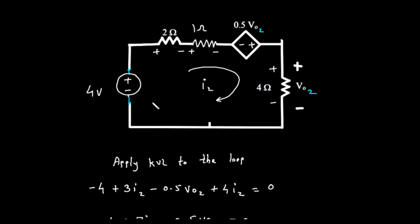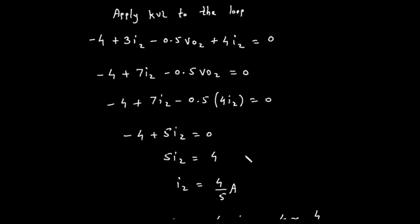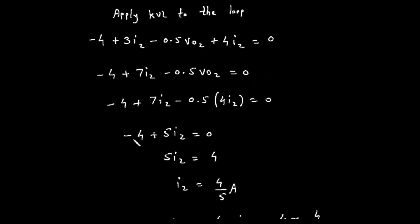Let's apply KVL to this new loop, calling the loop current I2. The solution treats the dependent source as a voltage source. The KVL equation is: minus 4, plus 3 times I2, minus 0.5 times V02, plus 4 times I2, equals 0. Combining the I2 terms: minus 4, plus 7 times I2, minus 0.5 times V02, equals 0. Using Ohm's law for the 4-ohm resistor, V02 equals 4 times I2. Substituting: minus 4, plus 7 times I2, minus 0.5 times (4 times I2), equals 0.